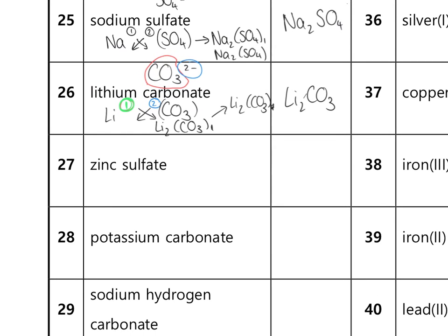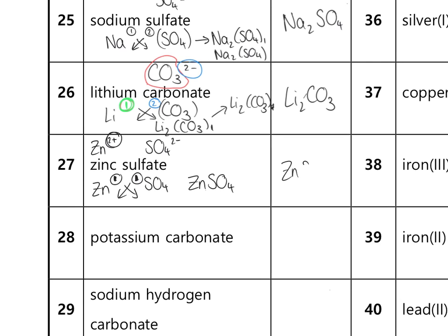Zinc sulfate: zinc is a transition metal with no Roman numeral given, so check the back of the periodic table — zinc appears as Zn²⁺, so valency is two. Sulfate is SO₄²⁻, valency two. Ratio 2:2 cancels to 1:1. Swapping a 1 down to each ion, and ignoring the ones and brackets, gives ZnSO₄. Potassium carbonate works out as K₂CO₃, similar to example 26.